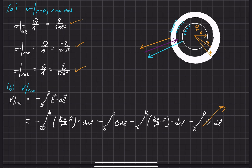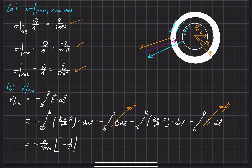The integrals over the zero-field regions are zero, so we only need to evaluate the two non-zero integrals. We can factor out K·Q = Q/(4πε₀) from both. The first integral gives −1/r evaluated from B to infinity, and the second gives −1/r evaluated from big R to A.